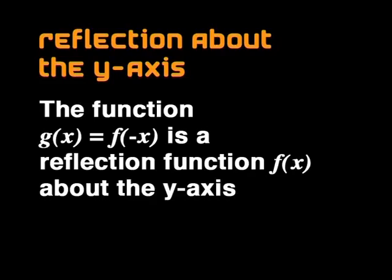Let's summarize how we describe a reflection about the y-axis. The function g of x is a reflection about the y-axis. So g of x equals f of minus x.